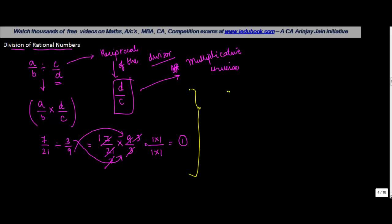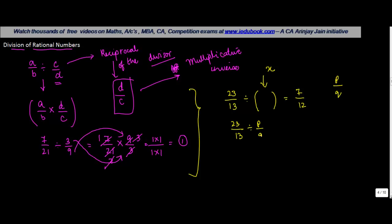Let's take another problem. You are told that 23 upon 13 divided by another rational number is equal to 7 upon 12, and you have to find out this rational number. Let's say this rational number is p upon q, so we say that 23 upon 13 divided by p upon q is equal to 7 upon 12.